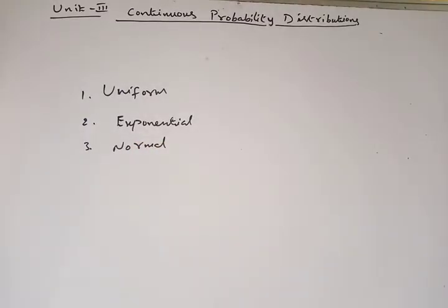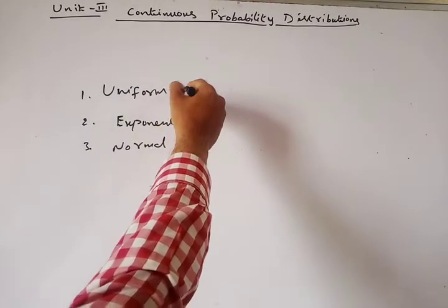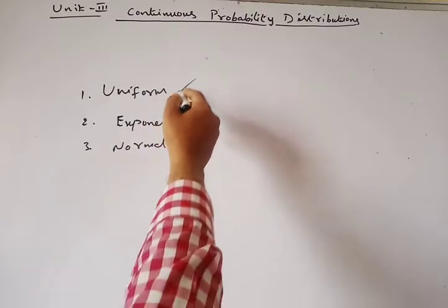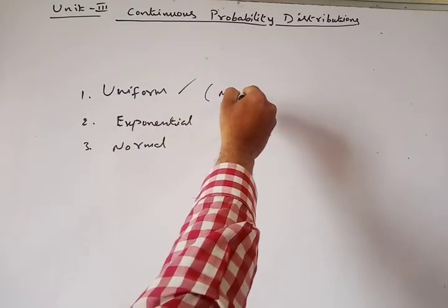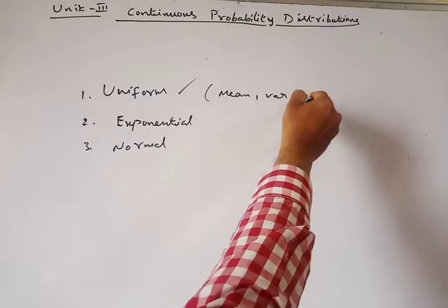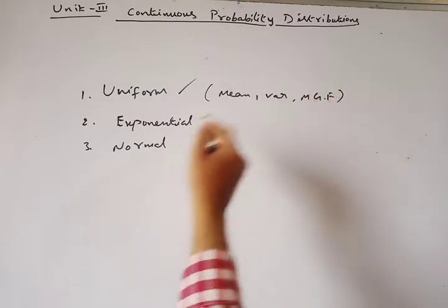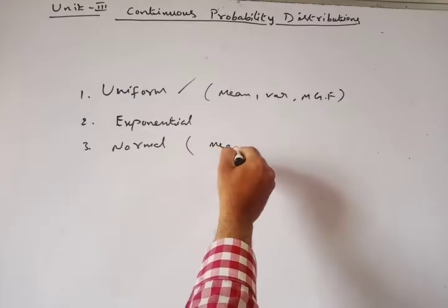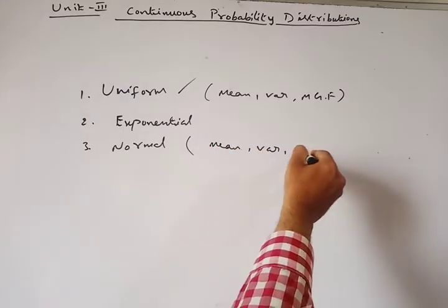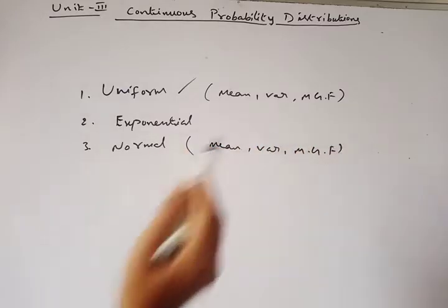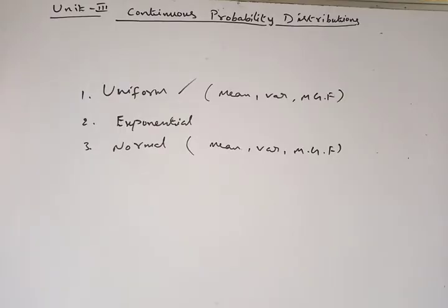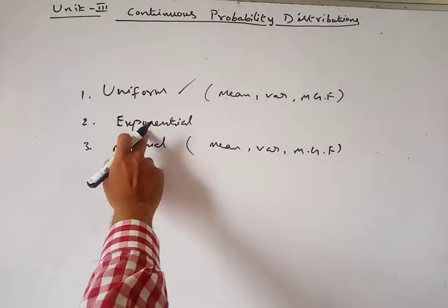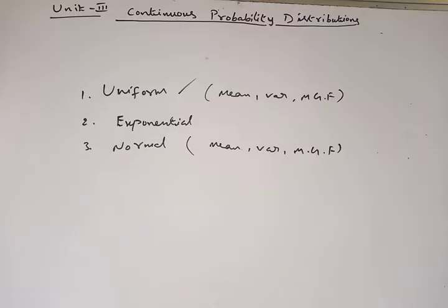In the previous video I explained uniform distribution — definition, mean, variance, and MGF. We already completed that, please go through that video. We also completed normal distribution — mean, variance, and moment generating function. What is left is exponential distribution: definition, mean, variance, and MGF, which we will cover in this video.